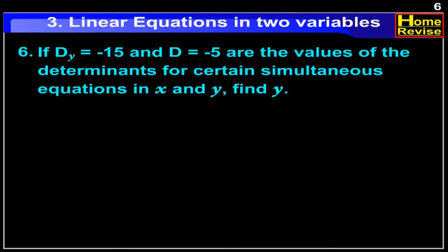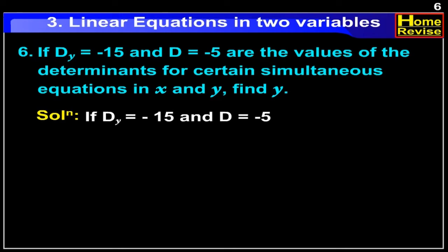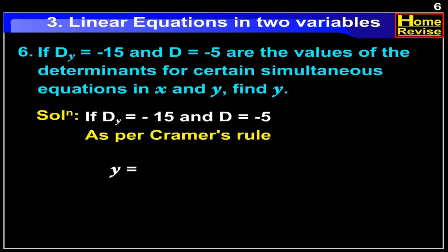If Dy is equal to minus 15 and D is equal to minus 5 are the values of the determinant for certain simultaneous equations in x and y, find y. As per Cramer's rule, y is equal to Dy by D. Therefore, y is equal to minus 15 upon minus 5. Therefore, y is equal to 3.